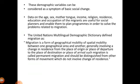These demographic variables can be considered as a symptom of social change. Data on the age, sex, mother tongue, income, religion, residence, education, and occupation of migrants are useful for social planners and enable them to plan programs to solve problems related to migration. The United Nations Multilingual Demographic Dictionary defines migration as a form of geographical or spatial mobility between one geographical area and another, generally involving a change in residence from the place of origin to the place of destination.